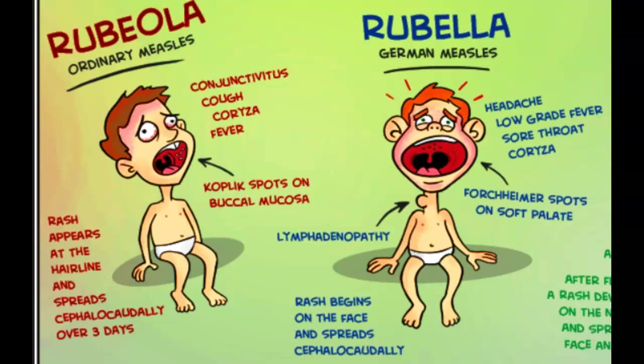The second disease is rubella, also known as German measles. Just like rubeola, it is caused by a virus. Rubella is usually a mild disease in children and adults. The virus enters the host, producing a rash at approximately 14 to 21 days.